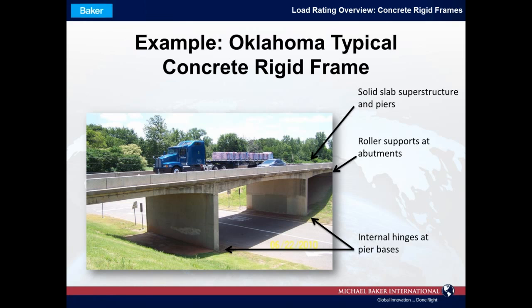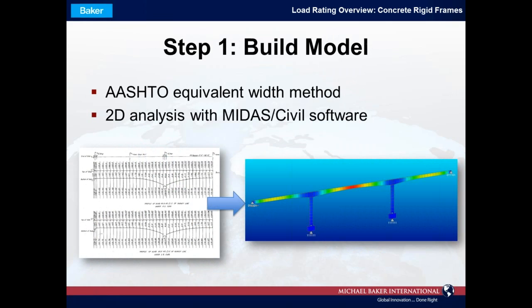The example bridge type is a concrete rigid frame found in the state of Oklahoma, typically constructed in the 1950s and early 60s as part of the early interstates. These concrete rigid frames have a solid slab superstructure and solid wall piers, roller supports at the abutments, internal hinges at the pier bases, and the wall piers have a fixed rigid connection to the superstructure. Baker has been rating a number of these structures. The first step is to build a structural model; we've been successfully using MIDAS software for this task.